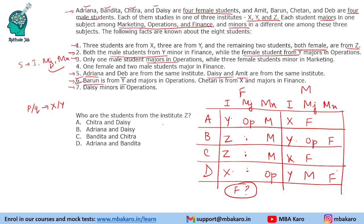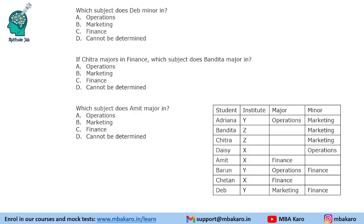Who are the students from institute Z? Easy to say B and C. Which subject does Dev minor in? Dev is minoring in finance. If Chitra majors in finance, which subject does Bandita major in? Bandita cannot major in finance because only one female student majors in finance. She cannot major in marketing either because she is minoring in marketing. So she will major in operations. Which subject does Amit major in? Amit's major subject is finance.